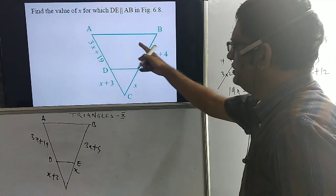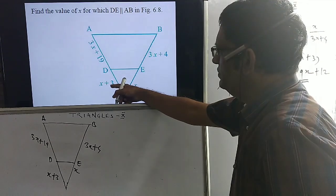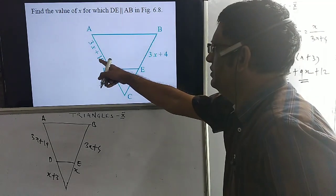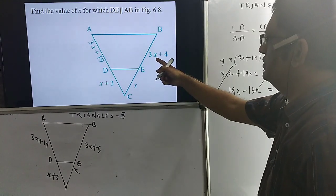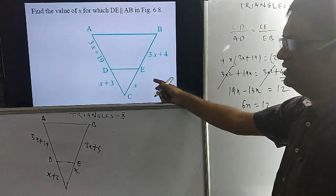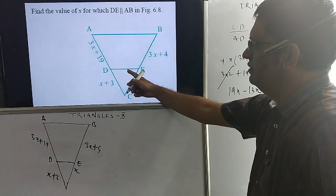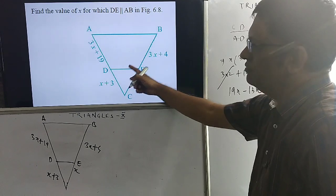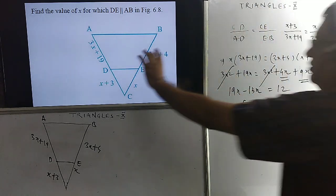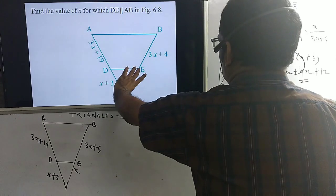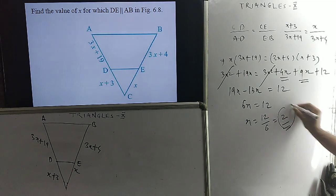In this triangle, DE is given parallel to AB. The value of CD equals x+3, AD equals 3x+19, CE equals x, and EB equals 3x+4. By the basic proportionality theorem, a segment drawn parallel to one side of a triangle divides the other two sides proportionally, so CD by AD equals CE by EB. Doing cross multiplication and solving gives the value of x equal to 2.